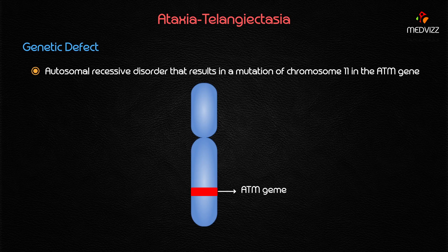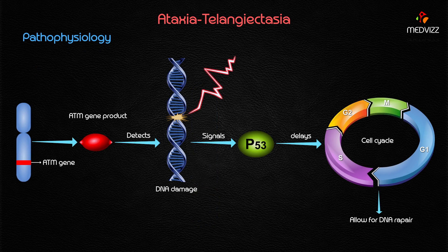Ataxia telangiectasia is an autosomal recessive disorder that results in a mutation on chromosome number 11, in the ATM gene. What exactly is the ATM gene and its gene product?